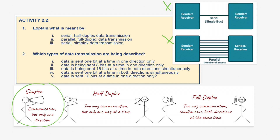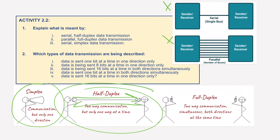So that's simplex. Now we move on to half-duplex. Half-duplex is sort of the in-between — data can move in both directions, but one has to wait for the other. So it sends data this way first, but then it has to wait for this to stop before data can be sent back.